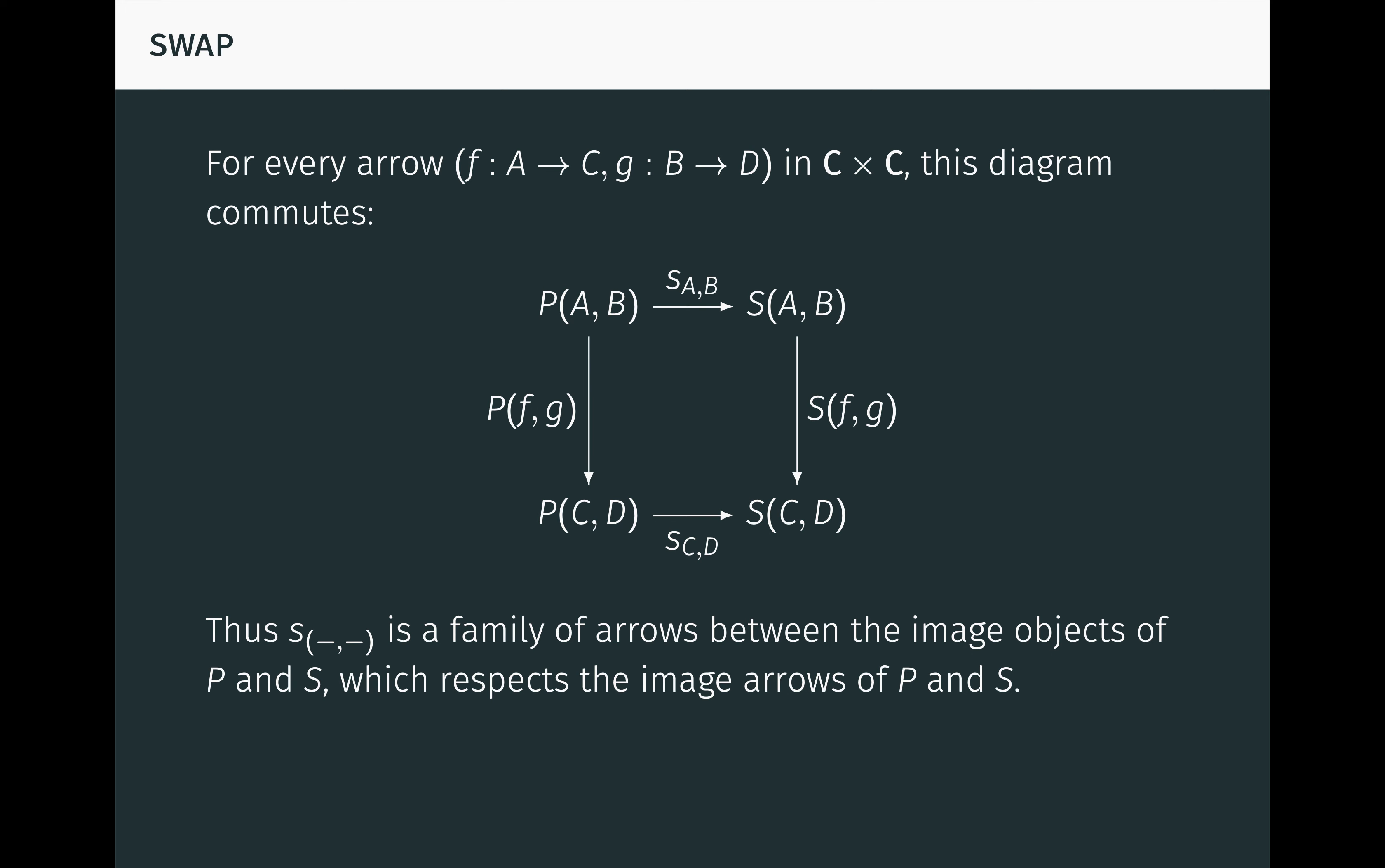Therefore swapping is seen to be a family of arrows between the image objects of P and S, which respects the image arrows of P and S. This defines a natural transformation from the functor P to the functor S, which can be viewed as an arrow from P to S.